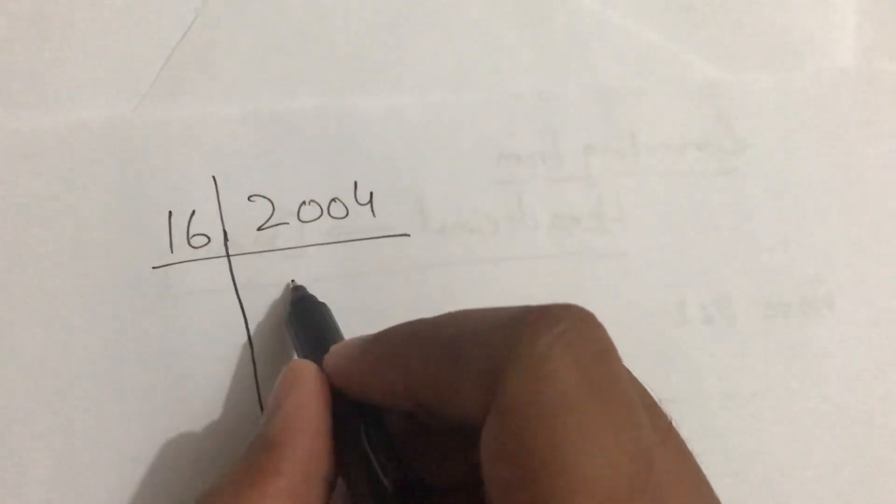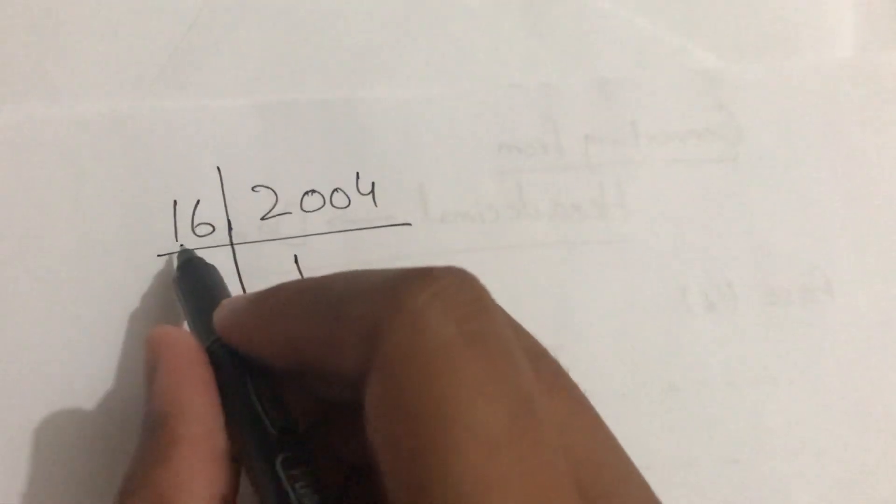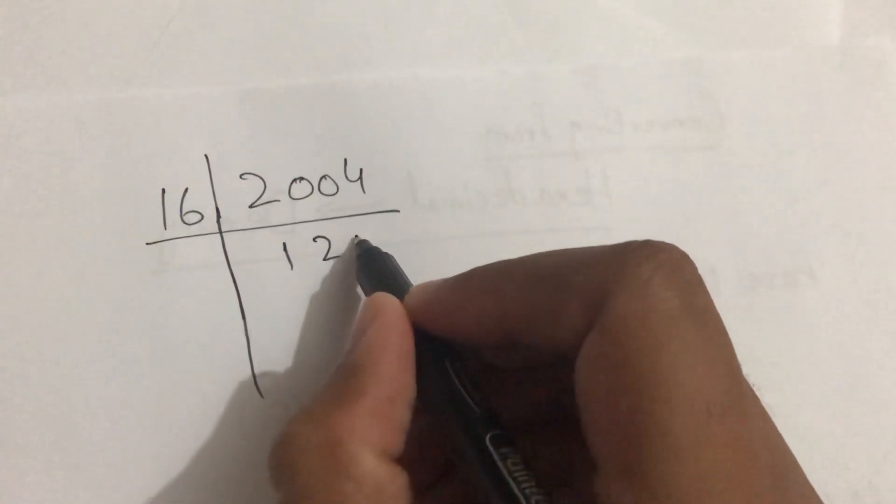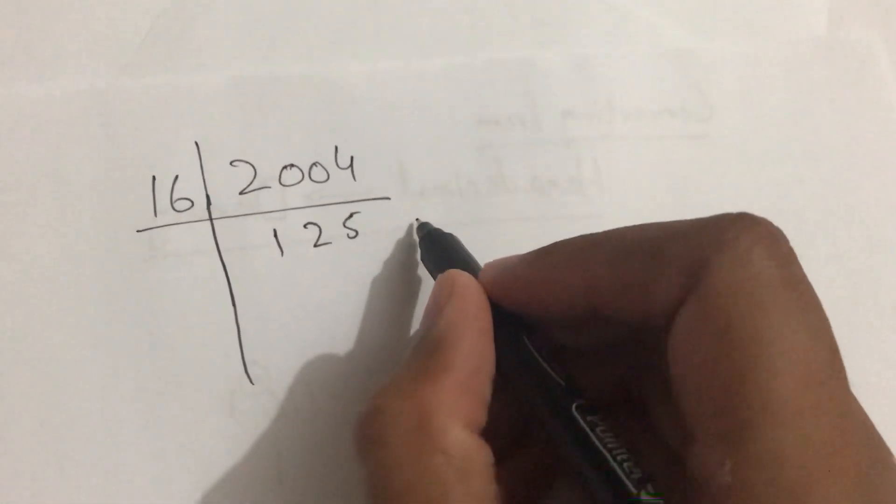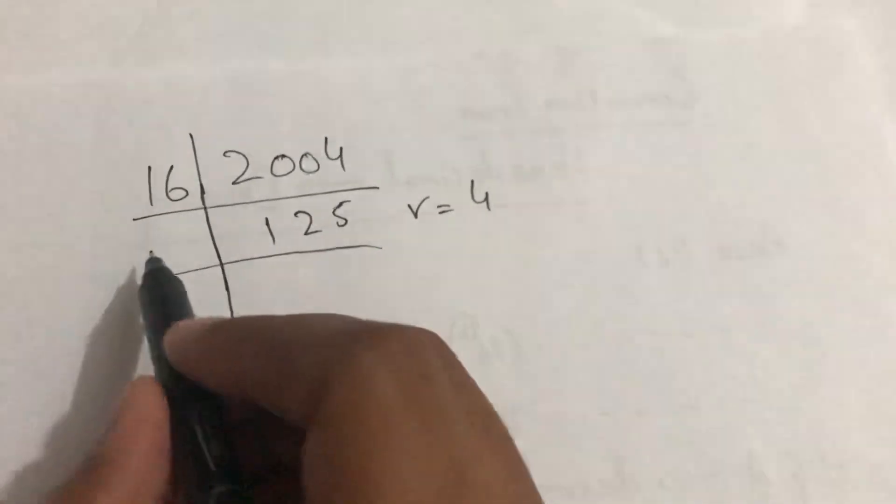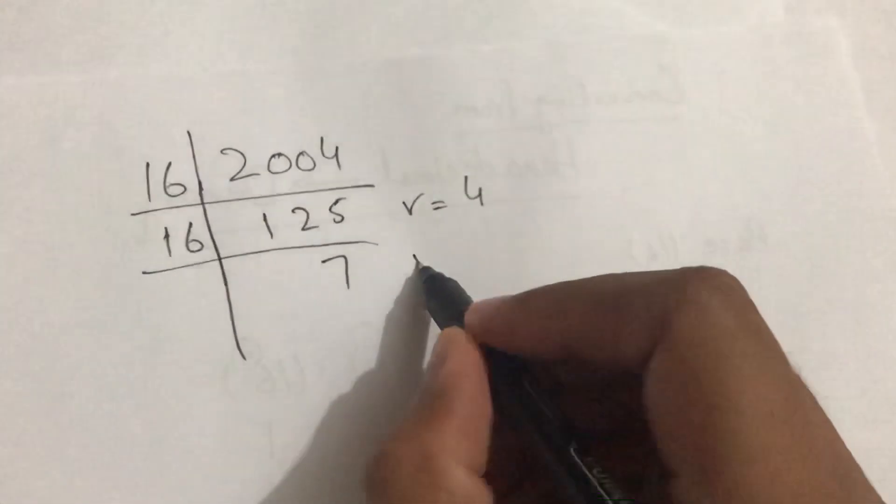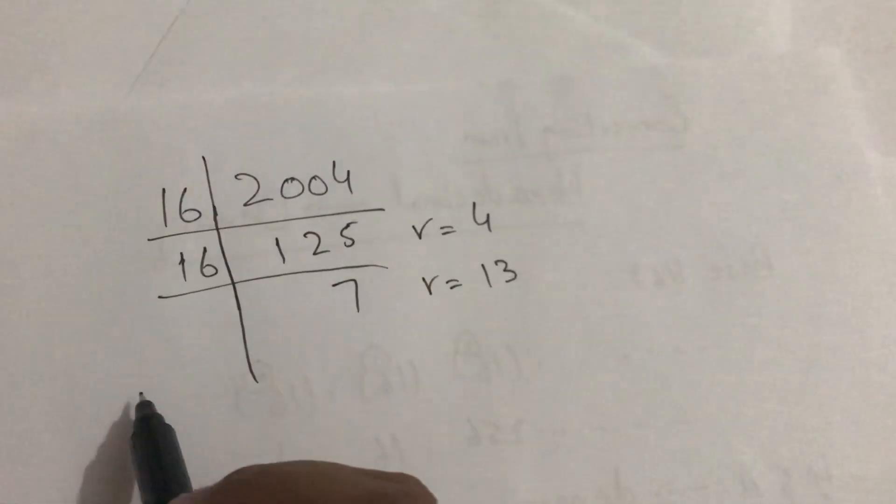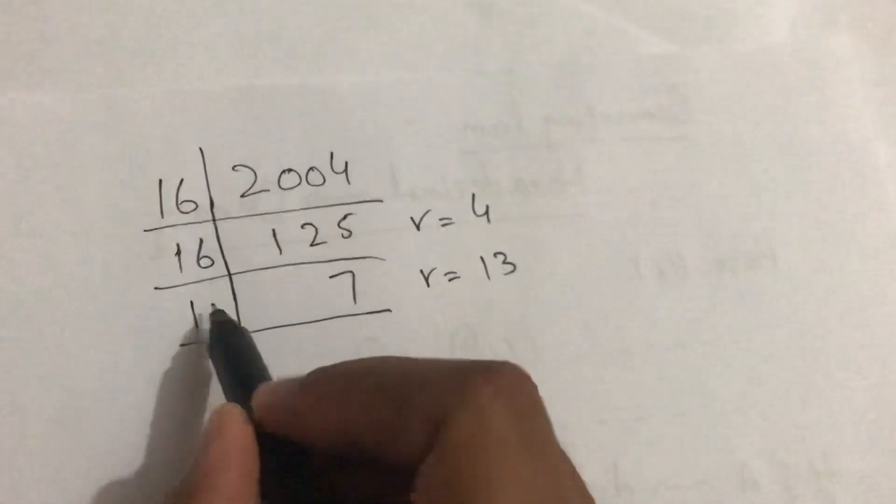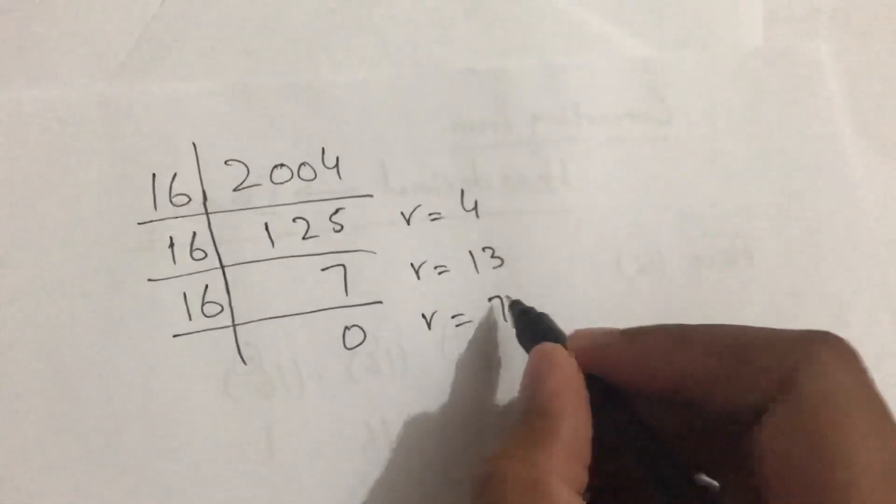2004 divided by 16, quotient is 125, remainder is 4. Then divide 125 by 16, quotient is 7, remainder is 13. Then divide 7 by 16, that will be 0, and remainder will be 7.